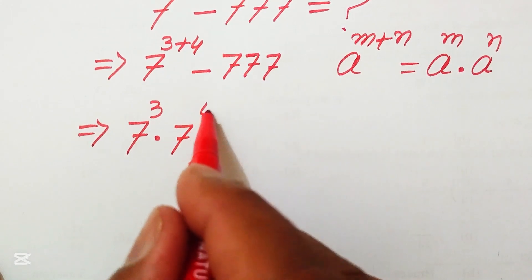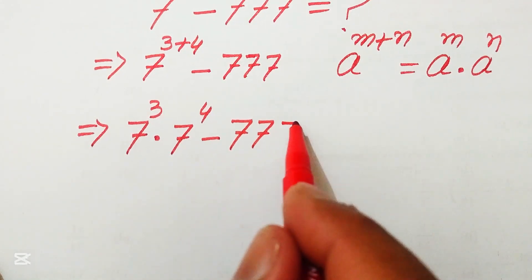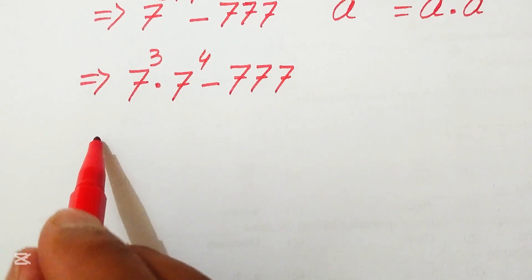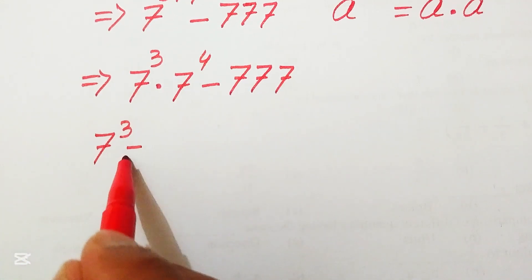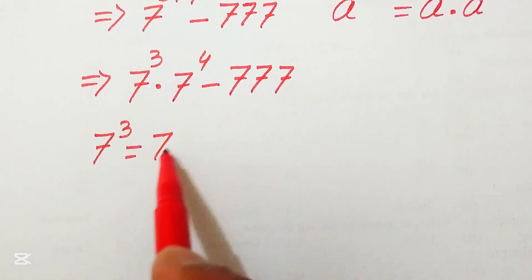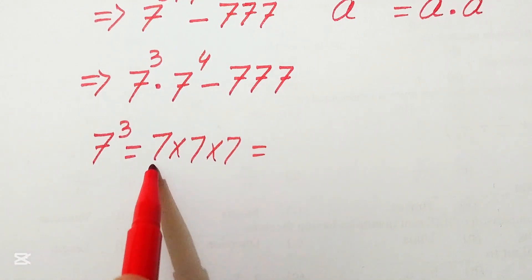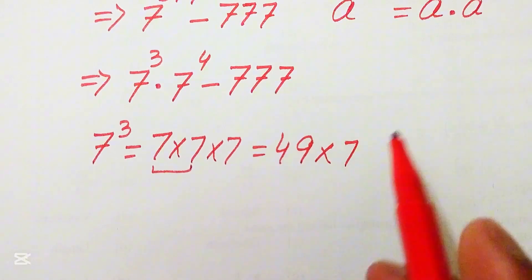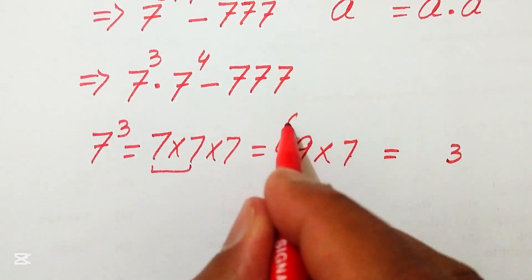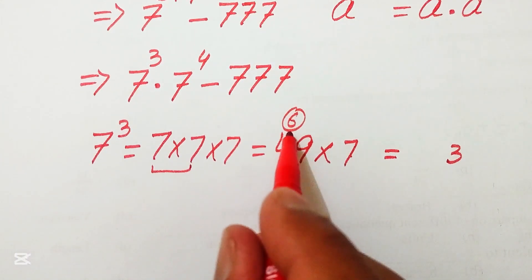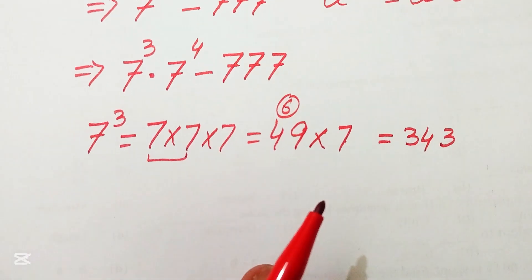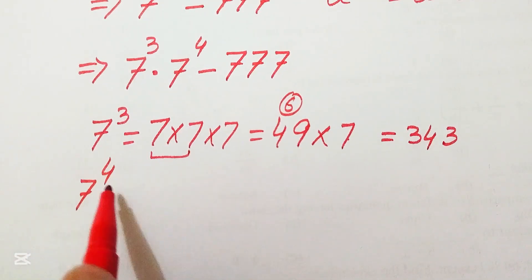Using this formula, we rewrite the expression as 7³ × 7⁴ minus 777. Now we need to find the values of 7³ and 7⁴. For 7 cubed: 7 × 7 = 49, then 49 × 7 — seven nines are 63, write 3 carry 6; seven fours are 28, plus 6 is 34 — so 7³ = 343.